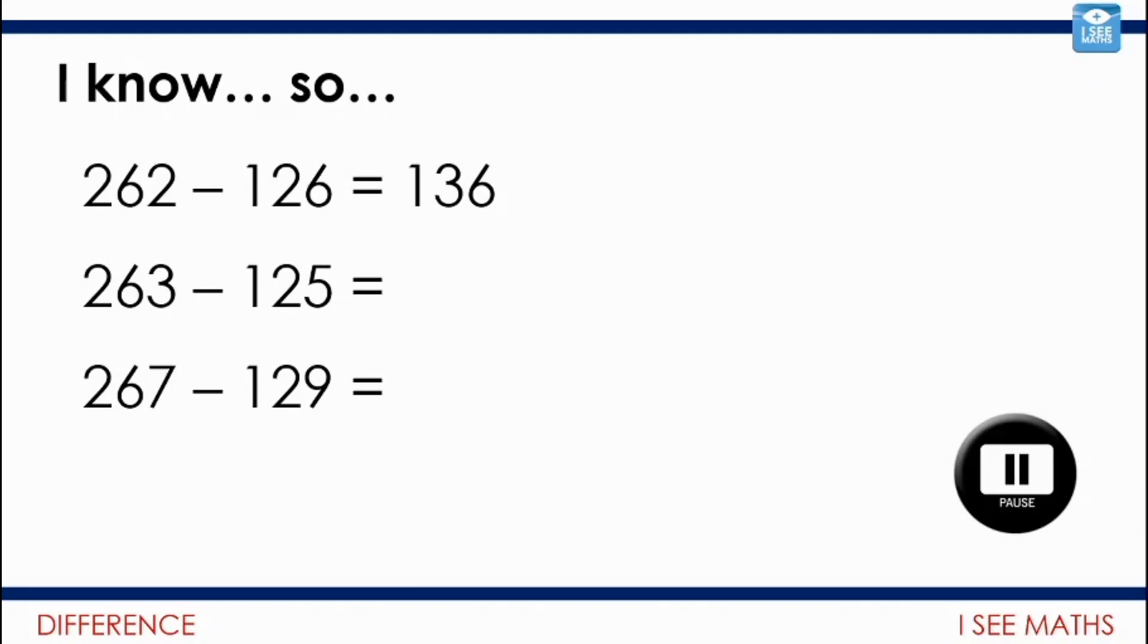I wonder if you'll be able to see these relationships and describe them. Pause the video and have a go. Okay so let's have a look. 162 subtract 126 equals 136. 263. One more subtract 125. One less will be 2 more. And then 263 to 267 that's 4 more. 125 to 129. 4 more. The answer will be the same.